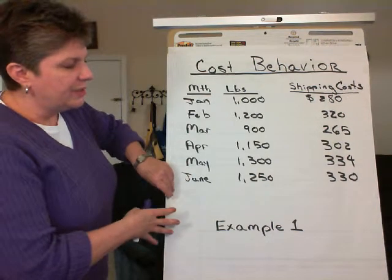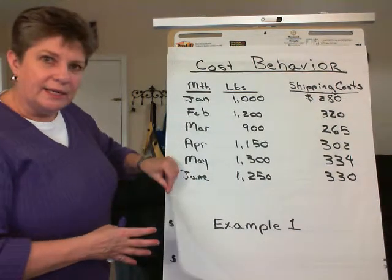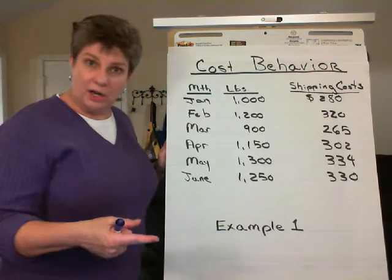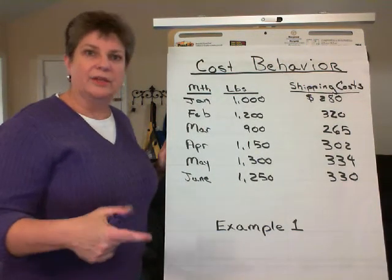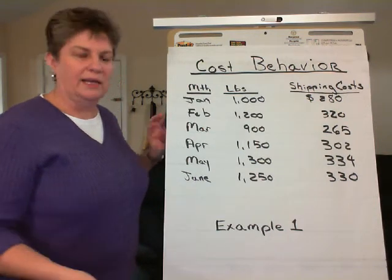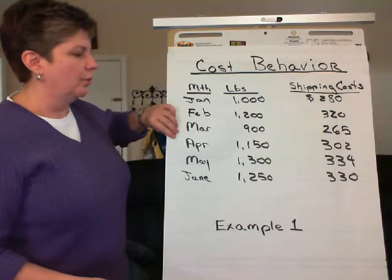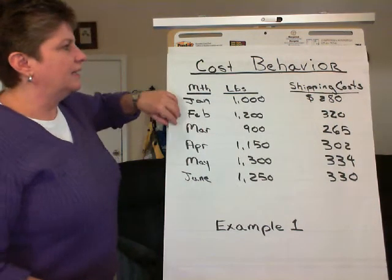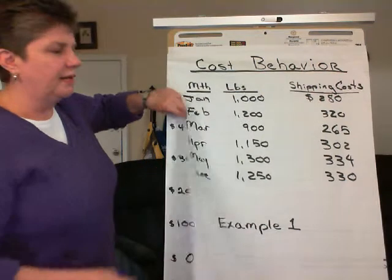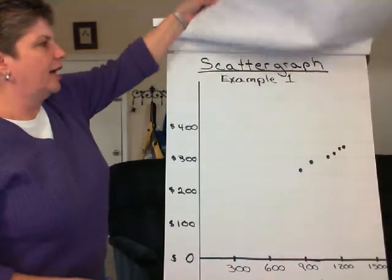We'll use this example data to illustrate first the scatter graph method, then the high-low method, and least squares regression. Now let's take a look at this data on a scatter graph.